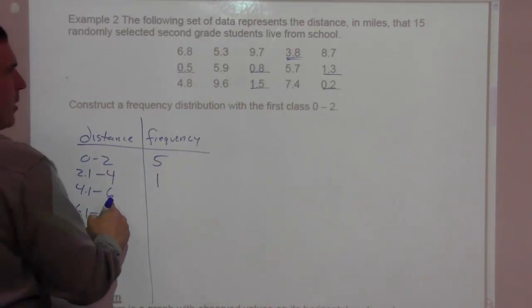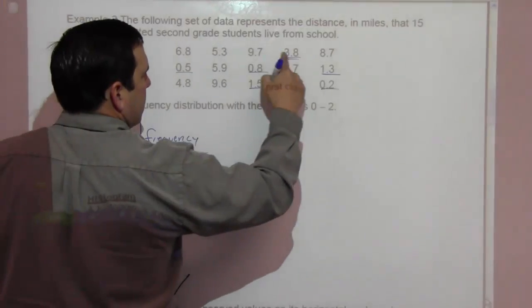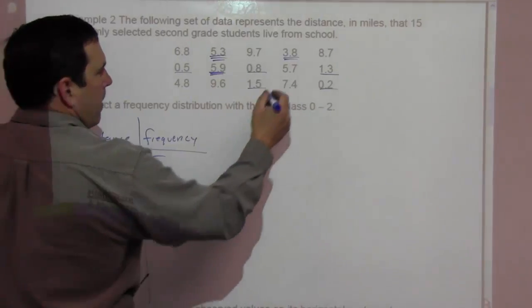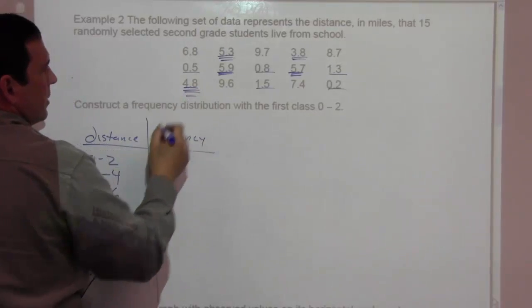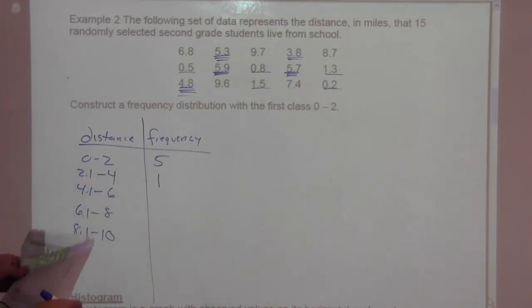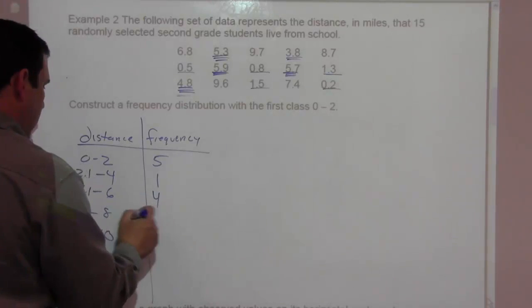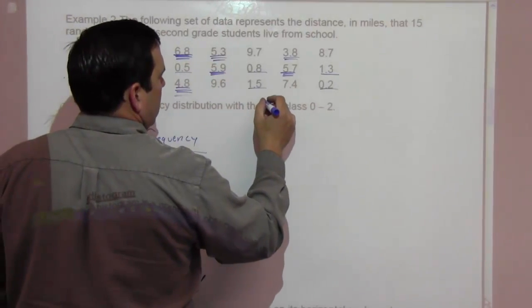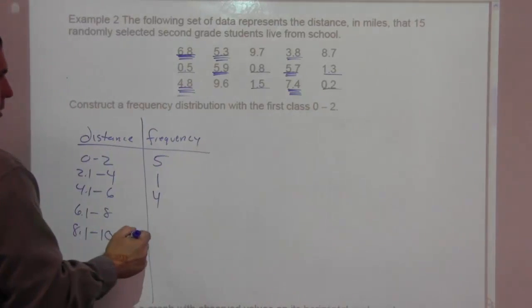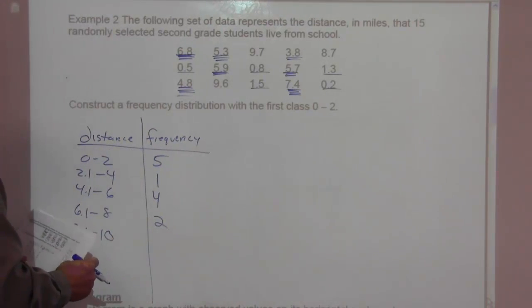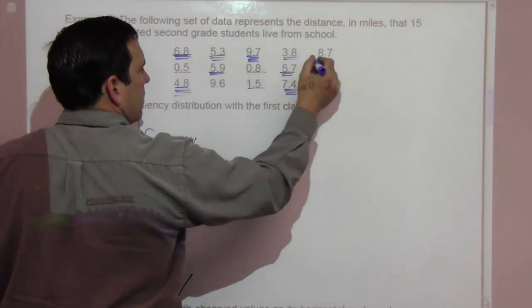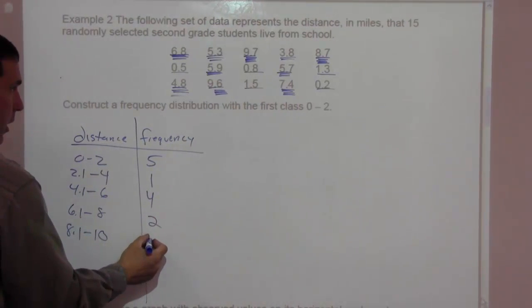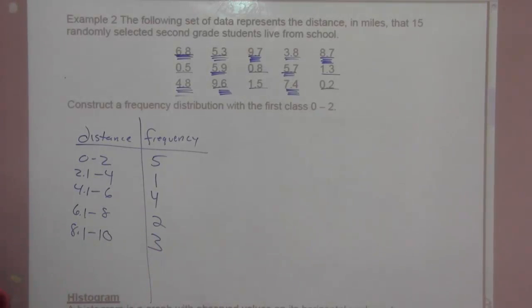How about four point one to six miles away? Here's, this is four point one to six. Four point one to six. Four point one to six, and four point one to six. Looks like we have four people in that category. How about six point one to eight? There we go, looks like two people in that category. And eight point one to ten, people who are left, and that is going to be three. Three students in that category.